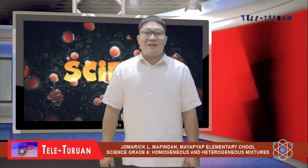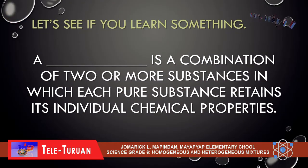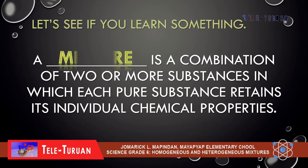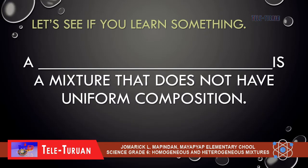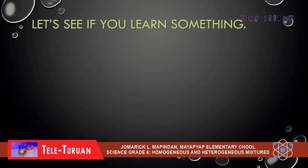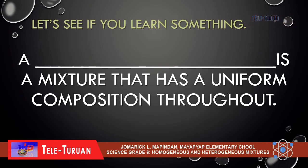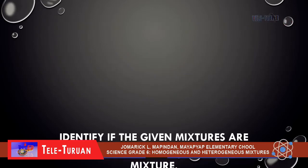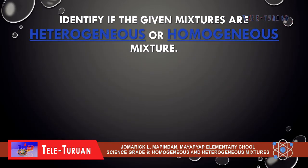Now let's see if you learned something. A mixture is a combination of two or more substances in which each pure substance retains its individual chemical properties. Your answer is mixture. A heterogeneous mixture is a mixture that does not have uniform composition. A homogeneous mixture is a mixture that has a uniform composition throughout. Now let's identify if the given mixtures are heterogeneous or homogeneous.